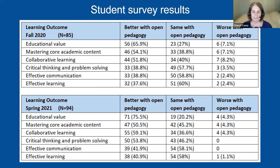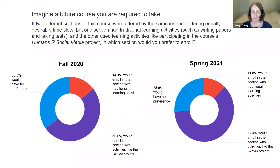Another interesting observation: in both semesters, the favorable outlook on open pedagogy dropped slightly as students progressed through the survey. One theory is question fatigue — students expressed some annoyance in later questions with comments like 'see previous answer.' We could test this by mixing up the order of questions. When asked if they'd prefer a future course with traditional activities or one like the HRSM project, the preference for open pedagogy increased from 50.6% in the fall to 62.4% in the spring.